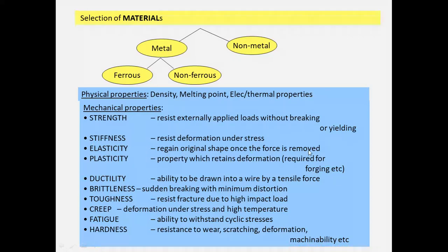Plasticity is the property which retains deformation required for forging. Ductility is the ability to be drawn into a wire by tensile force. Brittleness is sudden breaking with minimum distortion. Toughness resists fracture due to high impact load.